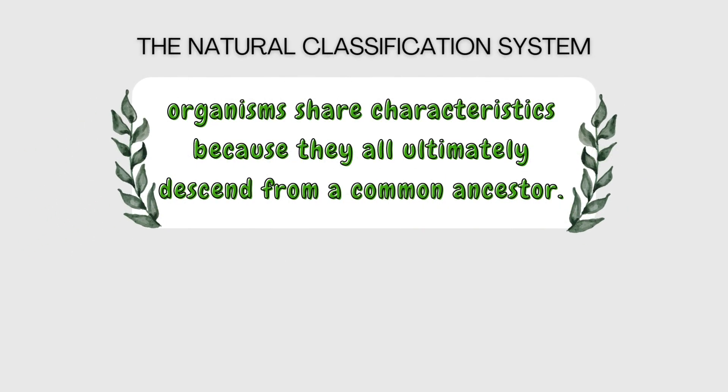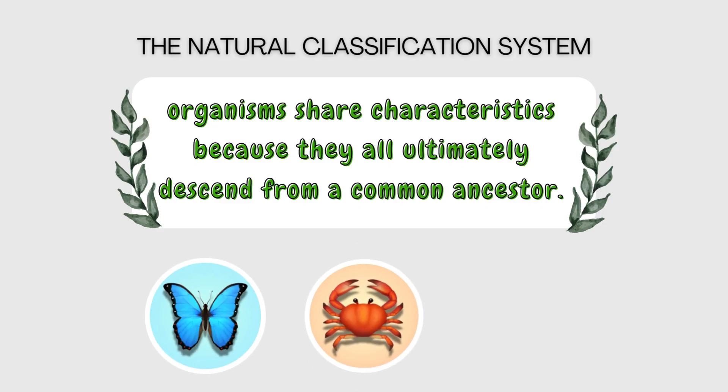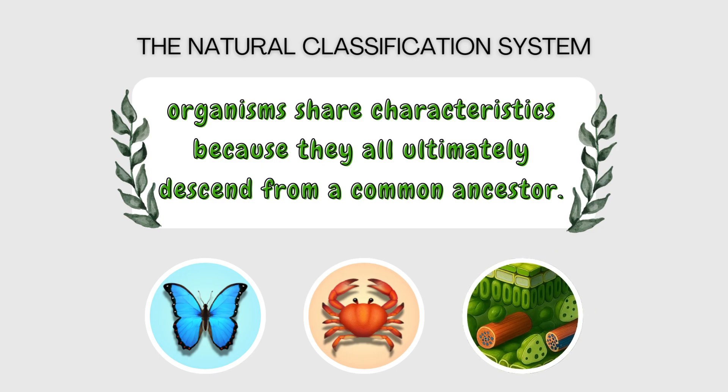You need to understand that organisms share characteristics because they all ultimately descend from a common ancestor. In the past, organisms were classified based on morphology — their overall form and shape, such as the presence of wings or legs — and anatomy, the detailed internal structure revealed through dissection, like that of a leaf, as shown here.